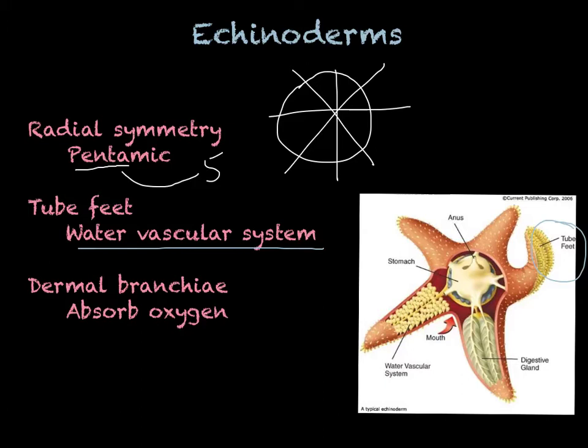Another thing that they all have is dermal branchia — these are the dots, the bumps that sort of make them rough. That's the area in which they absorb oxygen from the water. So they don't have lungs, and they don't have gills, but they have dermal branchia.